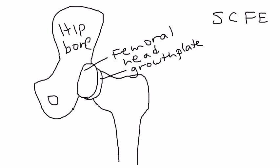The displacement is upward and forward — you can think of it as coming towards you on the screen. It's basically a displacement, and the reason this happens is because during adolescence, during this rapid phase of growth, a series of events can occur that lead to this condition.